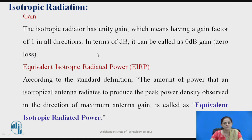The gain for isotropic radiation is 1 in all directions, which in decibels becomes 0 dB. The equivalent isotropic radiated power (EIRP) is the amount of power that an isotropic antenna radiates to produce the peak power density observed in the direction of maximum antenna gain.